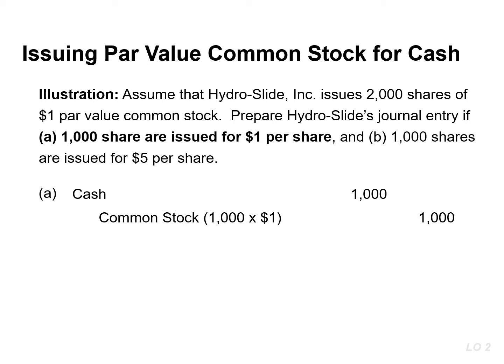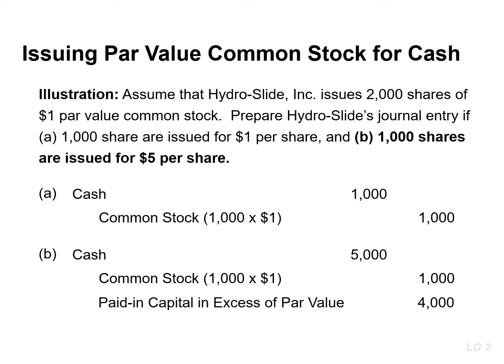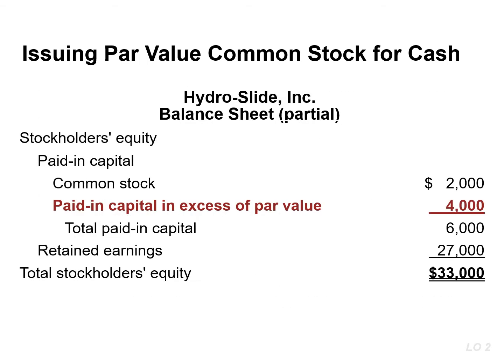To determine the amount, you simply multiply the number of shares issued by the par value per share. Now, let's assume this company issues an additional 1,000 shares for $5 per share. The entry would result in a debit to cash for $5,000. We would credit common stock only for the par value, which is 1,000 shares at $1. The amounts received above par value, in this case $4,000, would be credited to paid-in capital in excess of par value. The total paid-in capital from these two transactions is $6,000.